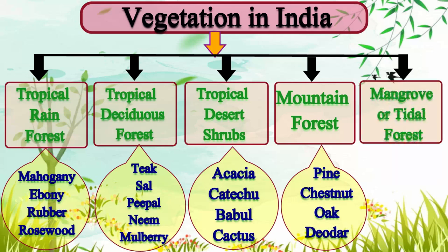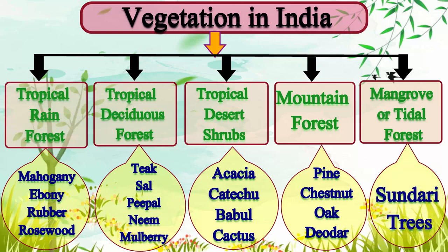Mangrove forests are also called tidal forests. Sundari trees are found here, which is why these forests are also called Sundarbans.